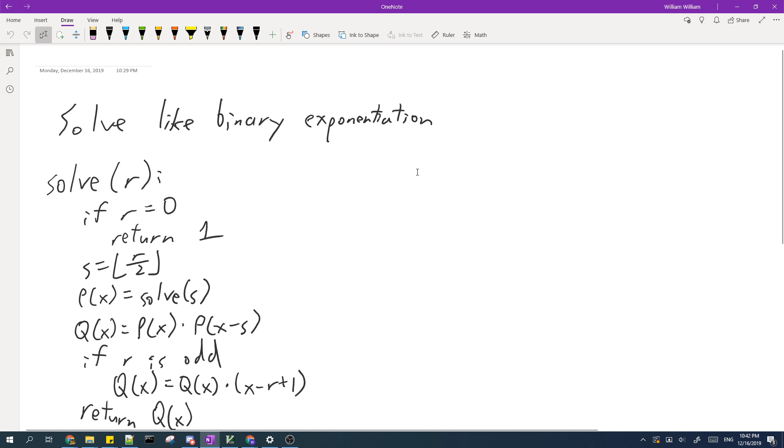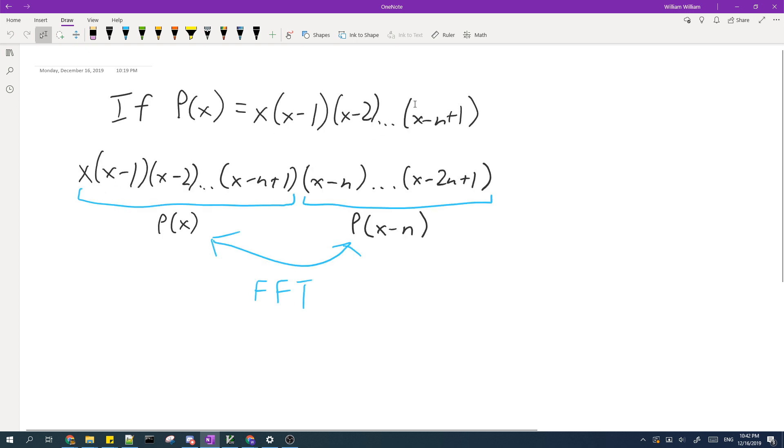So this suggests that we can solve it like binary exponentiation. So for this big product, we first solve it for the small part, then we can translate it to get it to become this, then we multiply it with FFT.